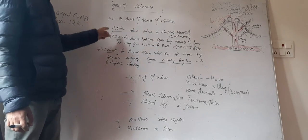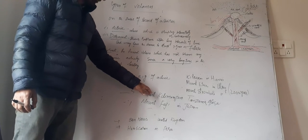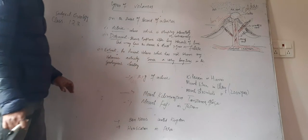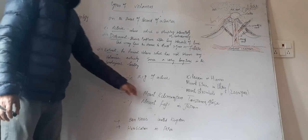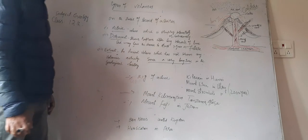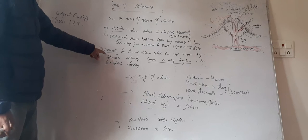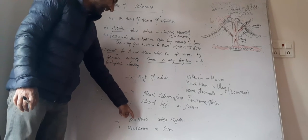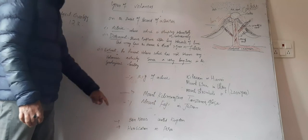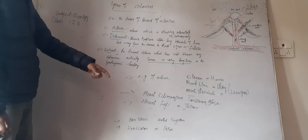Next, dormant volcano. The examples are Mount Kilimanjaro which is in Tanzania, Africa, and Mount Fuji which is in Japan. Similarly, to some extent, examples of extinct volcanoes are Ben Nevis which is in United Kingdom and Hawaiian which is in Peru.